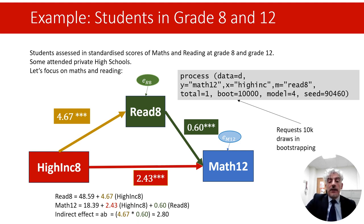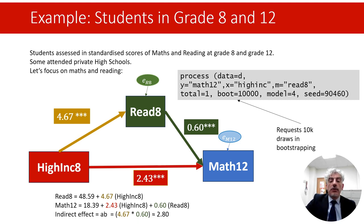And in this example, when you run it on your computer, you will see that the 95% confidence interval of the indirect effect is between approximately 2.51 and 3.13, which does not include zero. So we can reject the null hypothesis of the indirect effect being equal to zero.